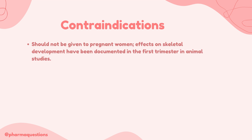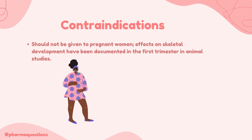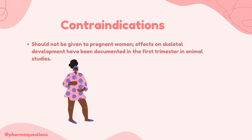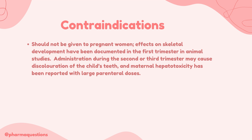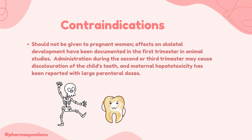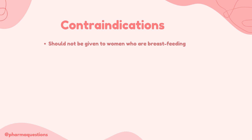The second contraindication is that tetracyclines should not be given to pregnant women, as they can affect fetal skeletal development, especially in the first trimester. In the second trimester, teeth discoloration may be seen, and in the third trimester, cases of maternal hepatotoxicity have been reported. The last contraindication is that tetracyclines should not be given to breastfeeding women.